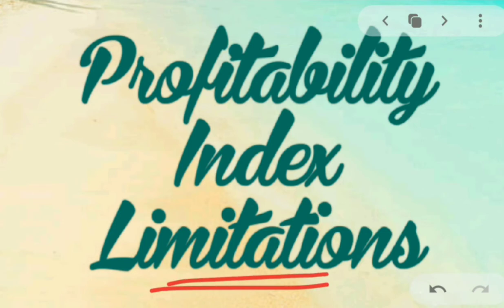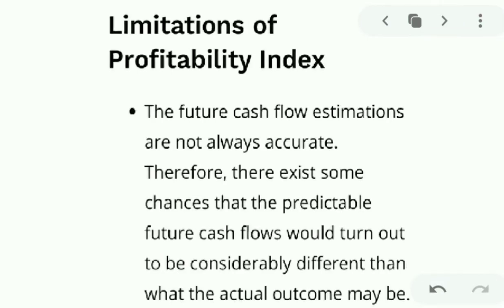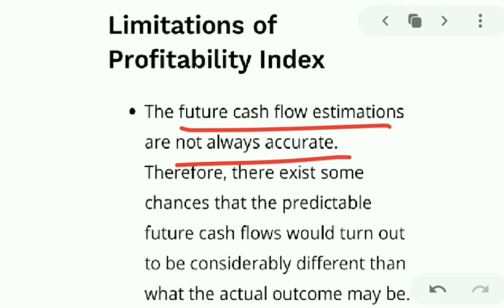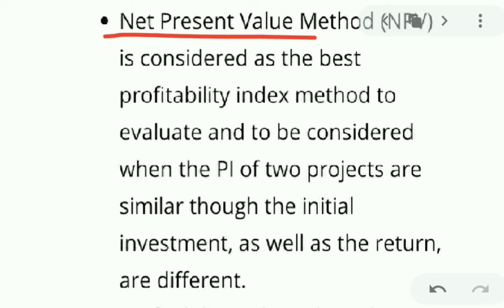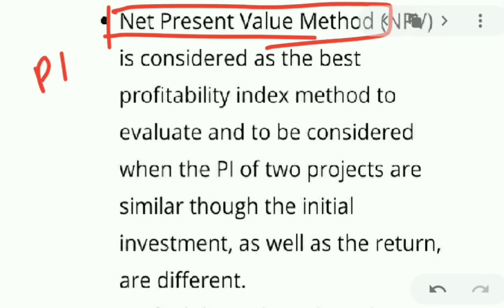Now the limitations of the profitability index. The first limitation is that future cash flow estimation is not always accurate — there are chances the predicted cash flows could turn out to be considerably different from the actual ones. Also, the net present value method is considered the best method to evaluate projects, but it is a lengthy process, which is why we use PI instead.